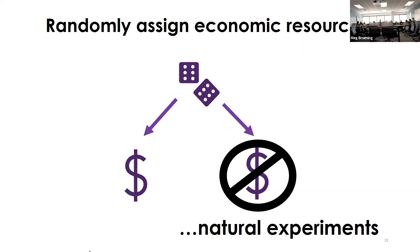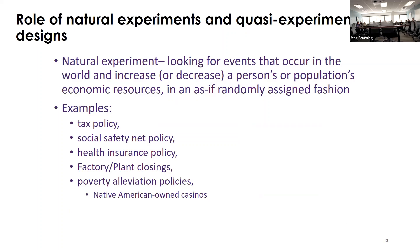In a natural experiment of economic resources, we're looking for a situation that happens in the world that changes the economic resources of a population in a quasi-random way — not the result of someone getting promoted, which would be tied to individual traits as unmeasured confounders. Instead, something like winning the lottery among lottery players is more of a random exposure. That person did nothing to get the money except play the lottery, so if you compare them to other lottery players, you have a nice quasi-random experiment.